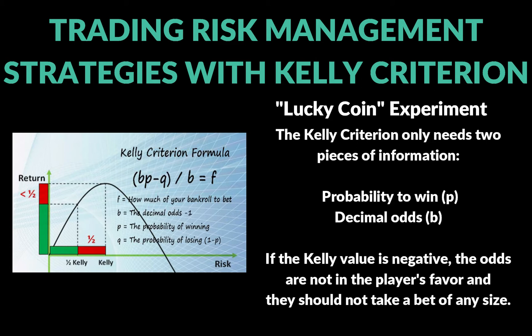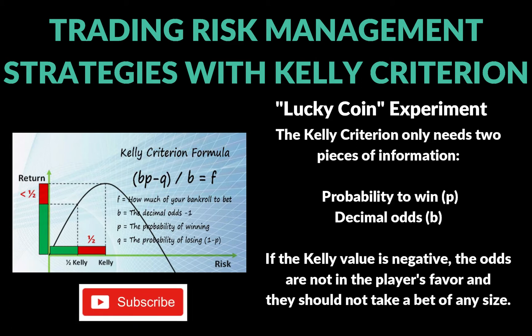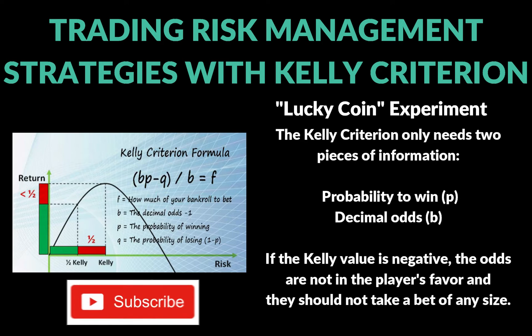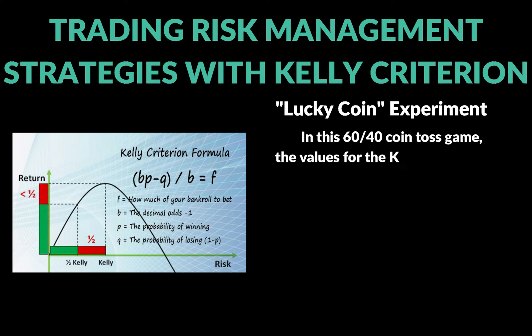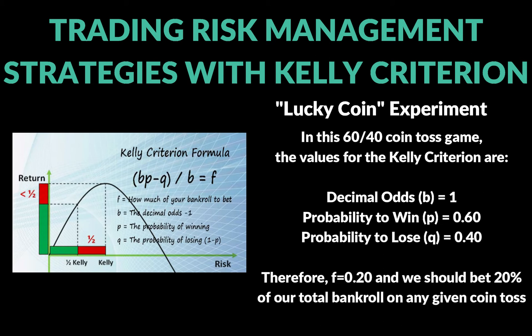In order to use the Kelly Criterion, we need just a few data points: our probability of winning (P), and the odds we would win (B). For the coin flip, B is 1 since it doubles us up — a two-to-one payout. P is 0.6 (probability to win), Q is 0.4 (probability to lose), divided by one. That gives us 20%.